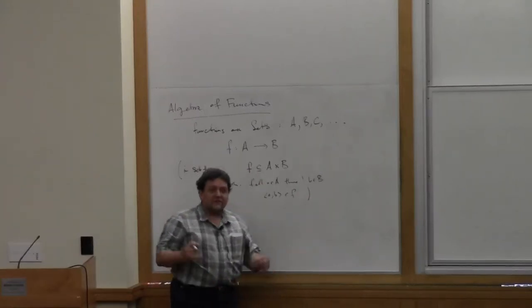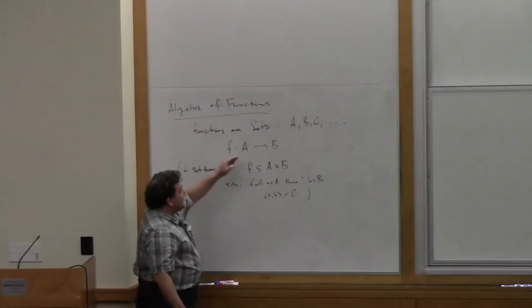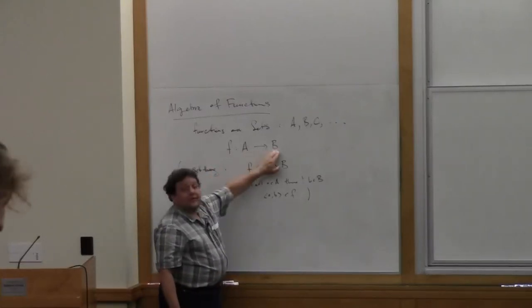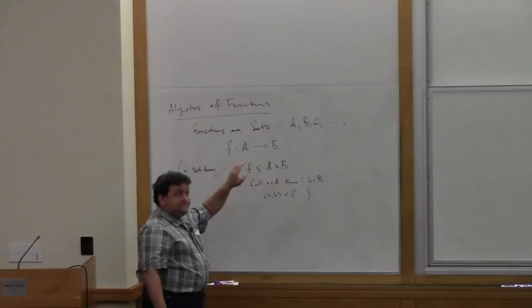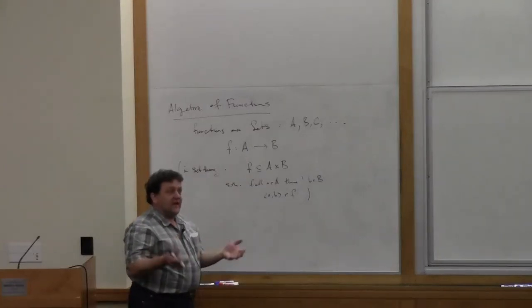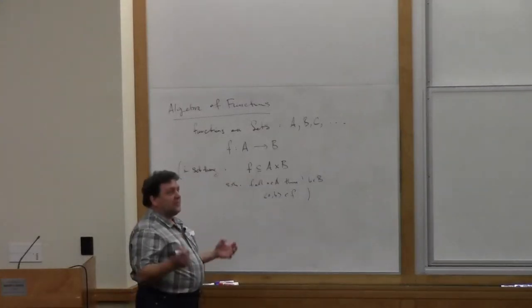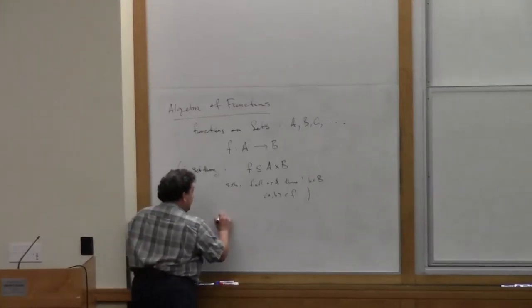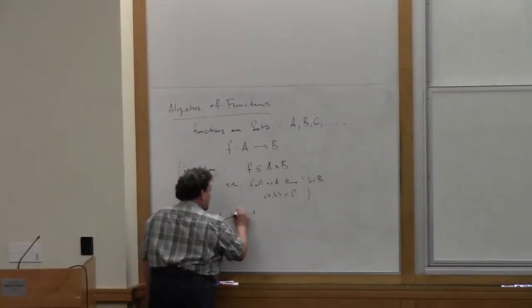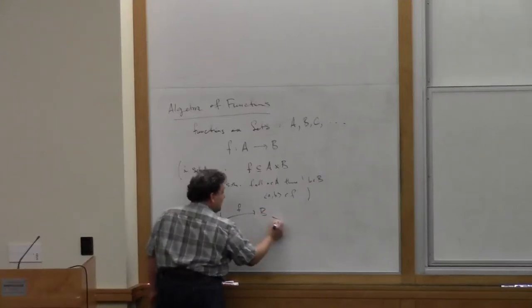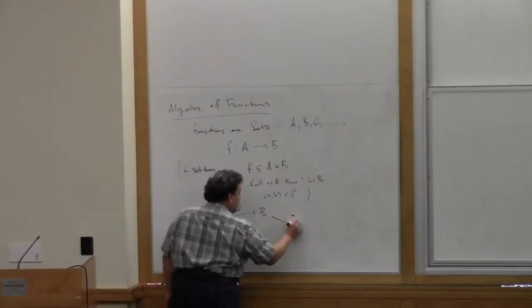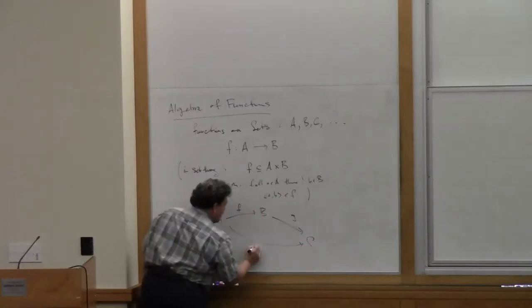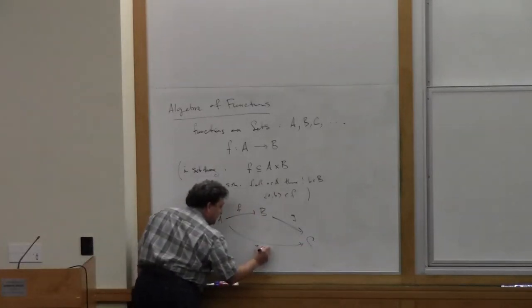I'm just going to think of functions in the intuitive way of taking an element of this set and returning an element of this set. How do functions behave — what operations are there on functions? The basic operation we're interested in in category theory is this: if I have a function F from A to B, and another function G from B to C, then there's this operation of composition, G after F.